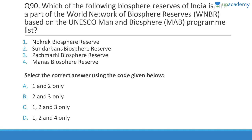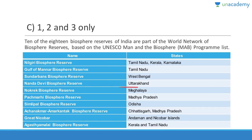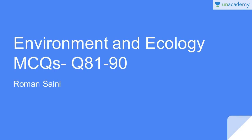Question 90: Biosphere reserves that are part of the UNESCO Man and Biosphere Programme world network include Nokrek, Sundarban, and Panchmari — but Manas is not included. Ten of India's 18 biosphere reserves are in the network: Nilgiri (Tamil Nadu/Kerala/Karnataka), Gulf of Mannar (Tamil Nadu), Sundarban (West Bengal), Nanda Devi (Uttarakhand), Nokrek (Meghalaya), Pachmarhi (MP), Simlipal (Odisha), Achanakmar-Amarkantak (Chhattisgarh/MP), Great Nicobar (Andaman & Nicobar), and Agasthyamalai (Kerala/Tamil Nadu).